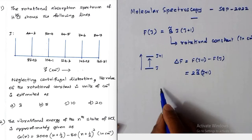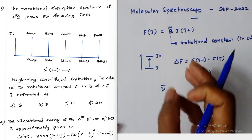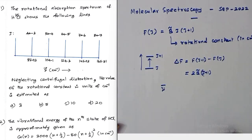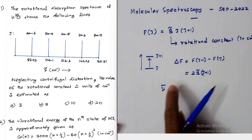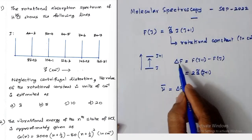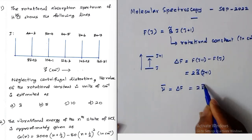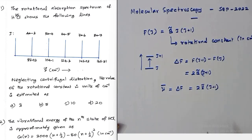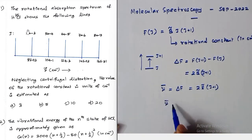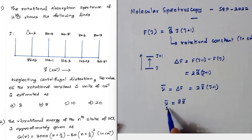The frequency of the spectral line — at what frequency the particular transition will absorb radiation from the microwave region — is equal to the energy required for the transition, since the energy is in wave number units. So ν̄ = 2B(J+1). For the 3→4 transition, putting J=3: frequency = 2B×4 = 8B.